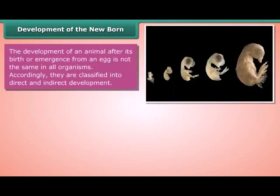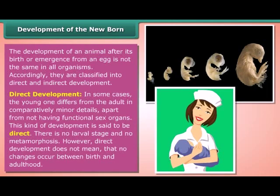Development of the newborn. The development of an animal after its birth or emergence from an egg is not the same in all organisms. Accordingly, they are classified into direct and indirect development. In direct development, the young one differs from the adult in comparatively minor details, apart from not having functional sex organs. There is no larval stage and no metamorphosis. However, direct development does not mean that no changes occur between birth and adulthood.